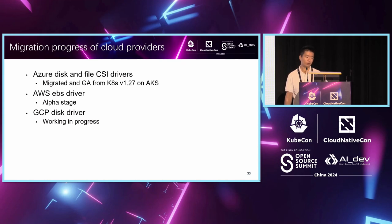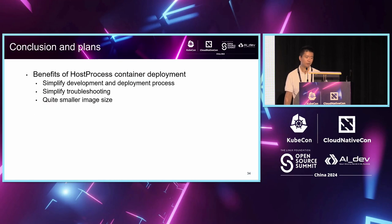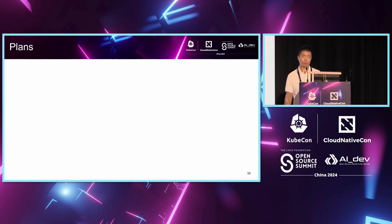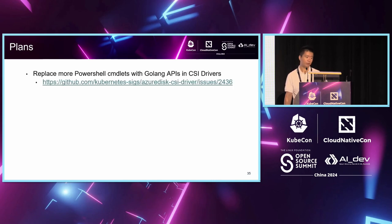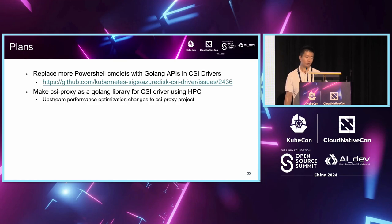The GCP disk driver is still a work in progress. For the conclusion: host process container deployment can simplify the development and deployment process, troubleshooting is easier, and it has a quite small image size which is beneficial for image distribution and management. For future plans, we will continue replacing more PowerShell command calls with Go API calls in the CSI driver, which can reduce CPU and memory usage significantly. We will also continue making CSI proxy available as a Go library for CSI drivers using host process containers — currently it's in alpha state and we want to make it beta and then GA.